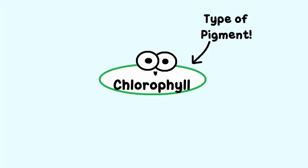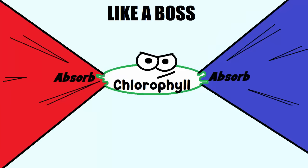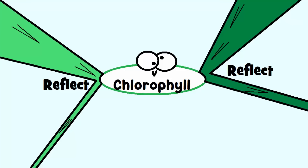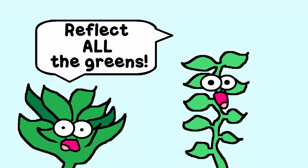Well, one pigment that plants use for photosynthesis is called chlorophyll. Chlorophyll is an expert at absorbing red and blue light, but not so much green light. Because it does not absorb very much green light, it actually reflects green light. Therefore, many plants appear green to our eyes.